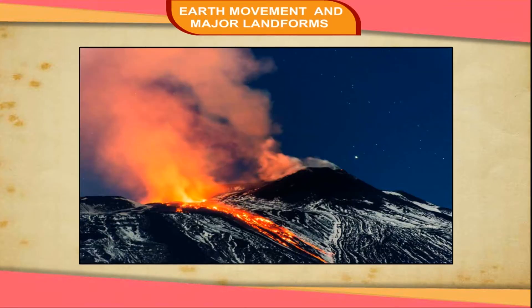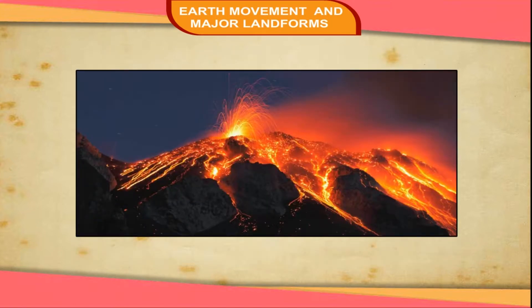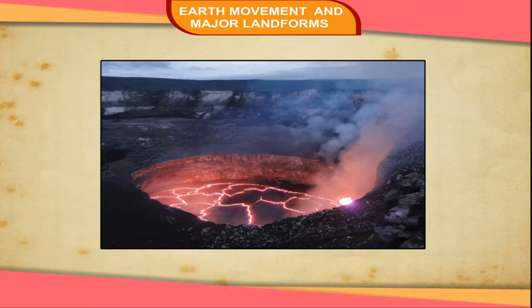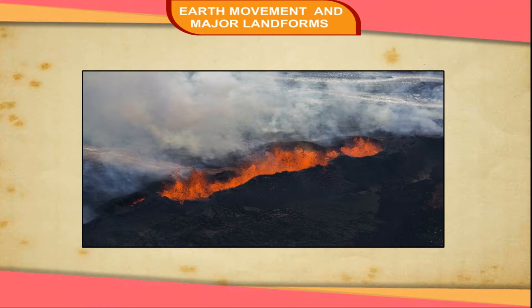Volcanoes. People generally think of a volcano as a mountain that ejects lava and flames of fire. However, volcanoes are openings in the Earth's crust through which materials are thrown out from the interior of the Earth. The material thrown out includes hot molten rock or lava along with ash, some solid rock particles, steam and gas. The opening is called a vent, around which a conical mountain may be formed. The funnel-shaped basin surrounding the vent is called a crater.